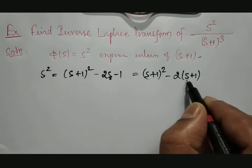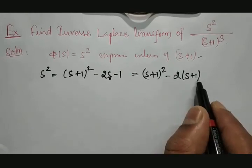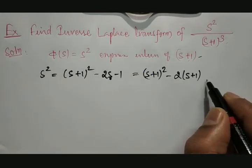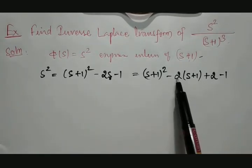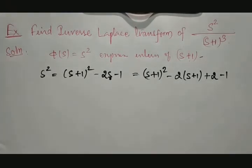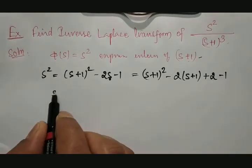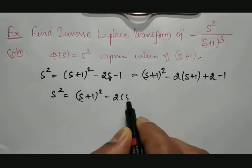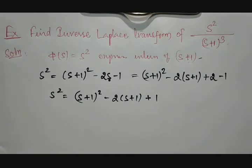If I write s as (s+1), then the minus 2s becomes minus 2(s+1), which gives minus 2 extra. But we only have minus 1, so I add plus 2 to compensate, and the minus 1 remains. The +2 and the extra −2 cancel out. Therefore, overall: s² = (s+1)² − 2(s+1) + 1.